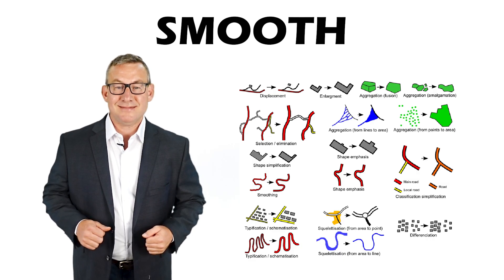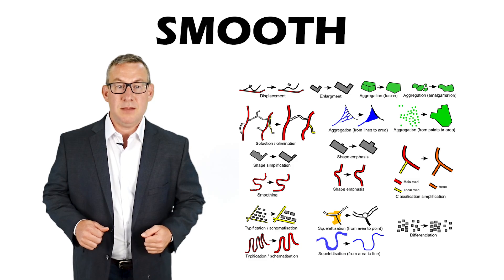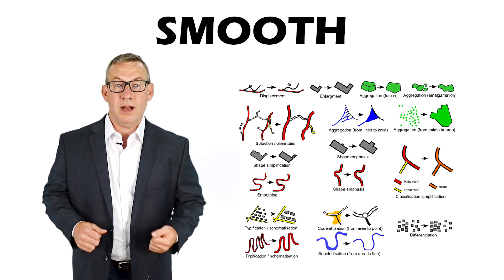Smooth makes the shapes look smoother, which may require adding vertices.